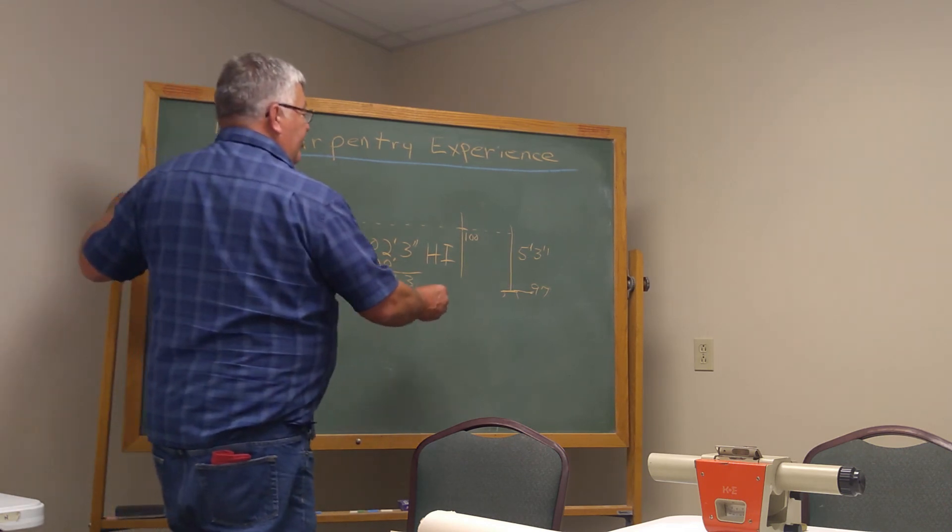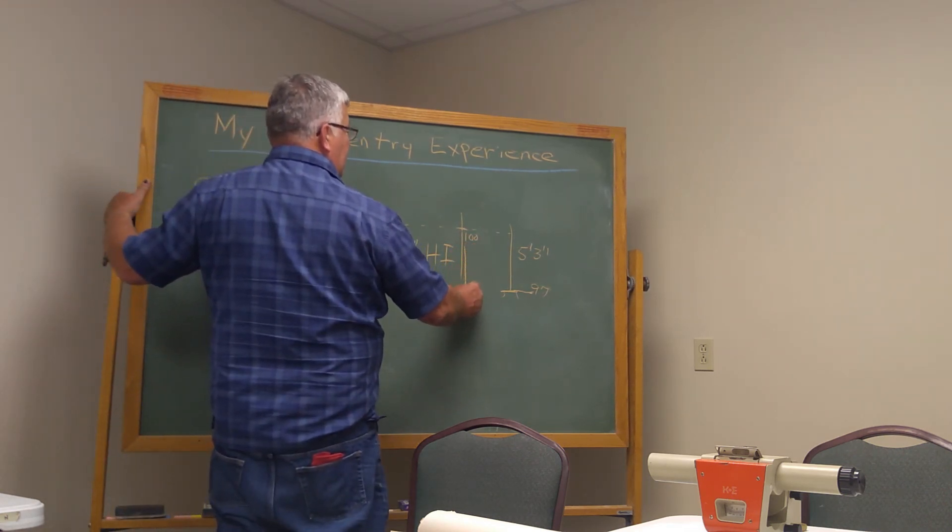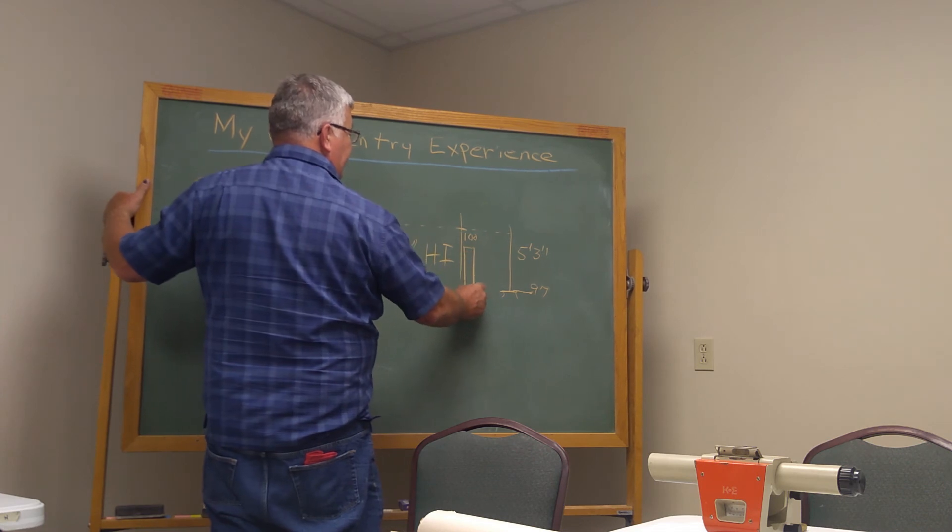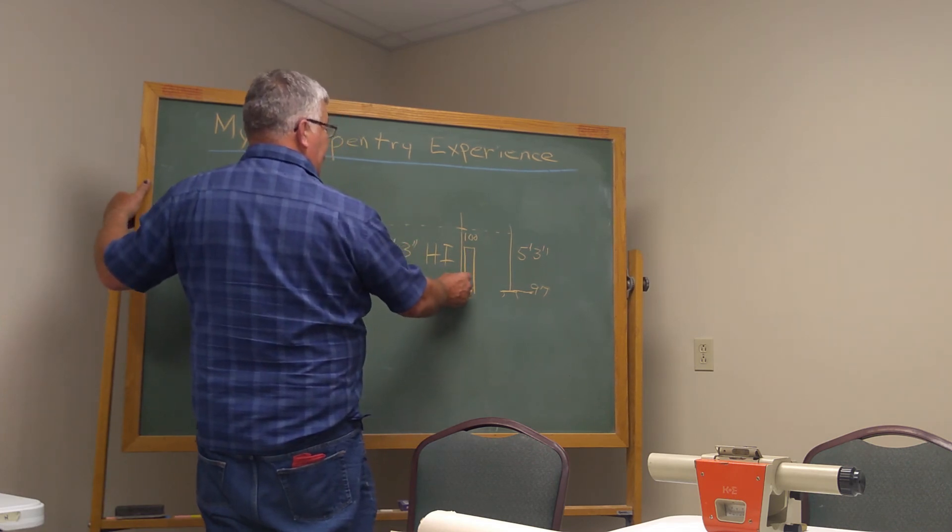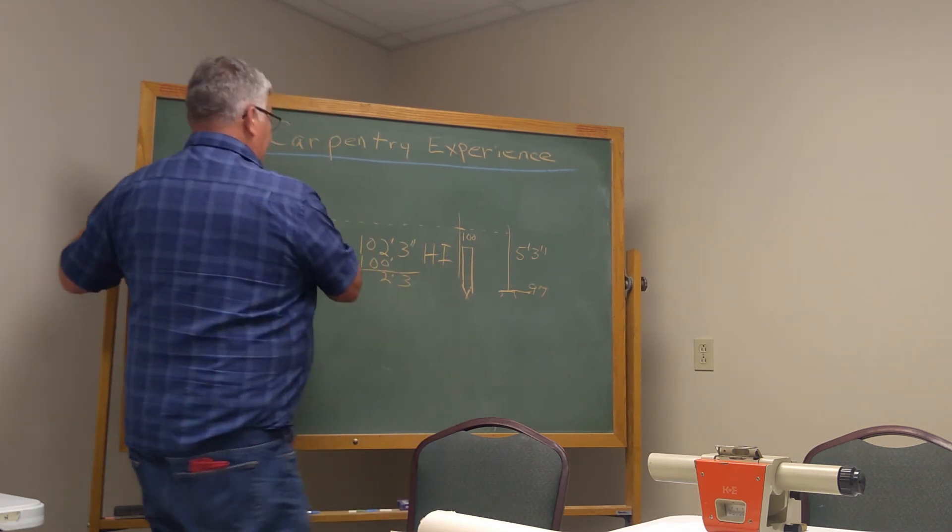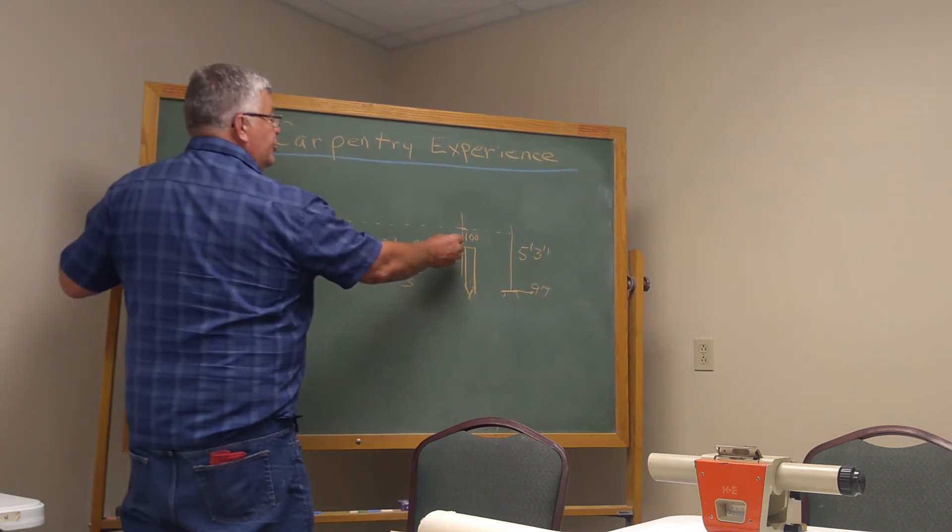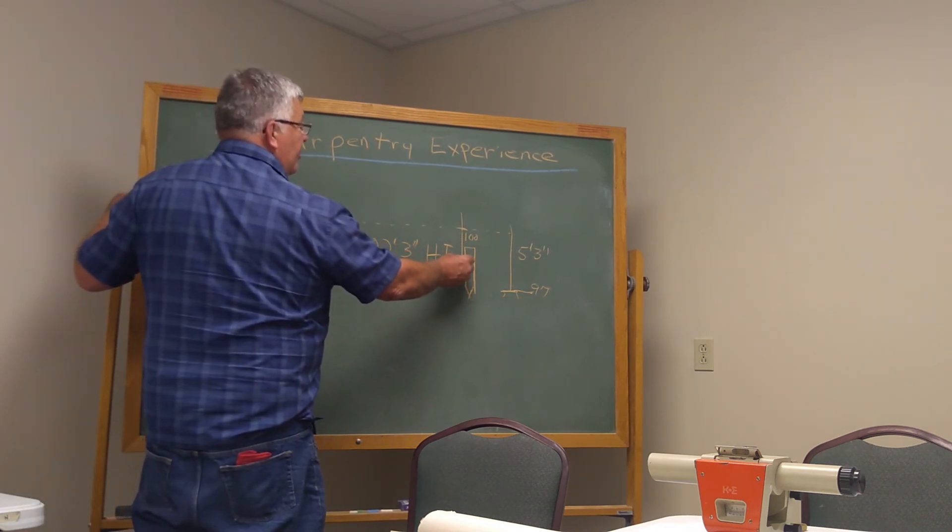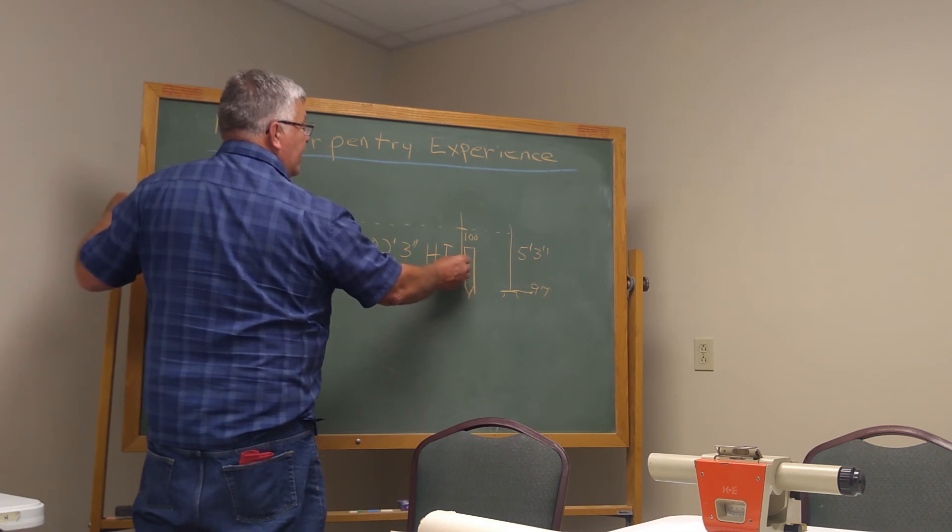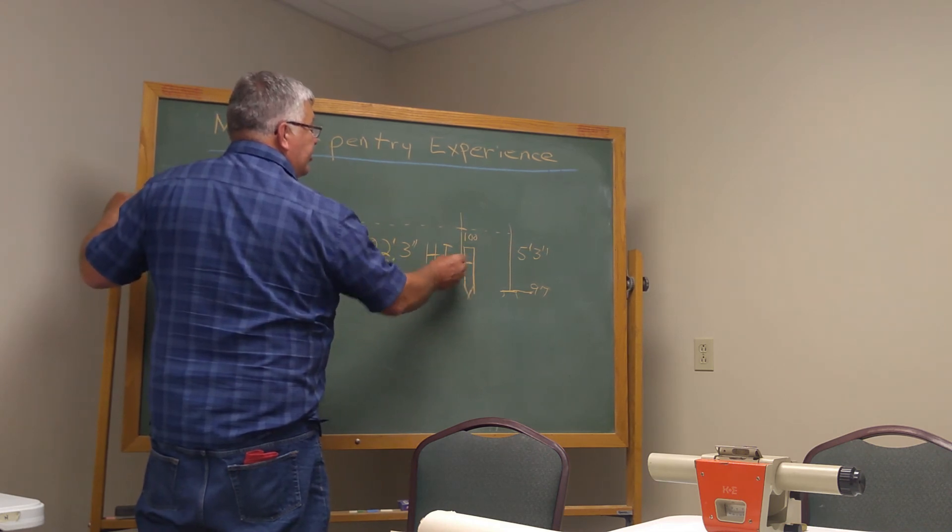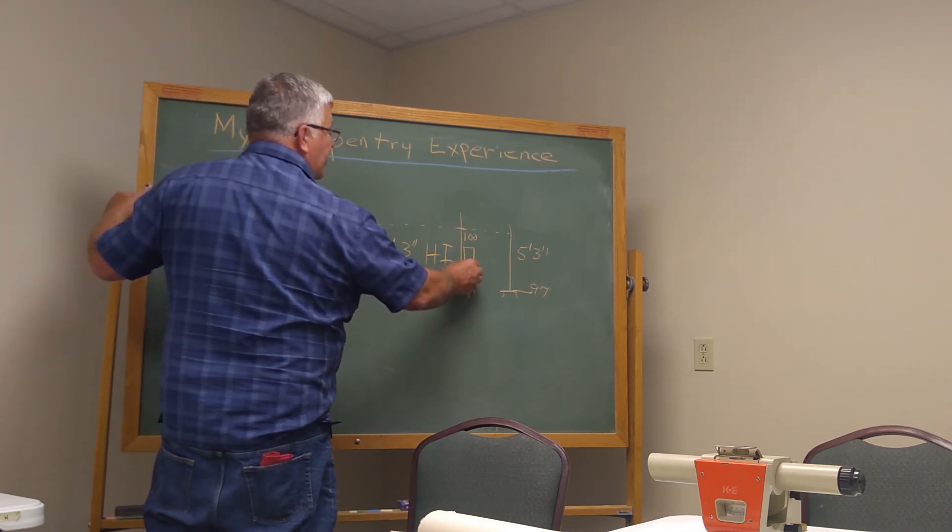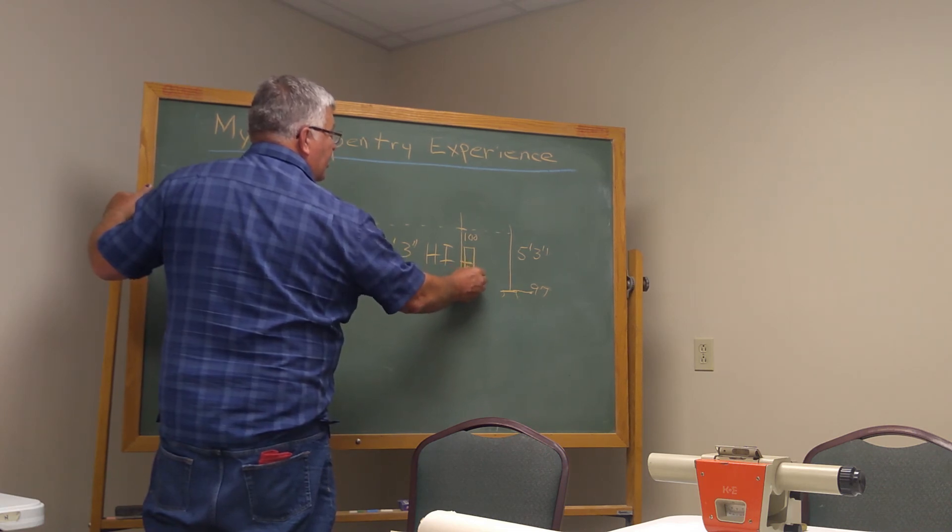So, when I have my rod, my stake driven in the ground, I would bring it up till I read two foot and three inches on my rod. Bring it up. When I'm shooting that, I would mark on my stake. That is my finished floor.